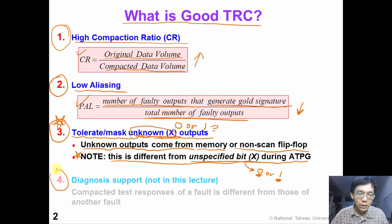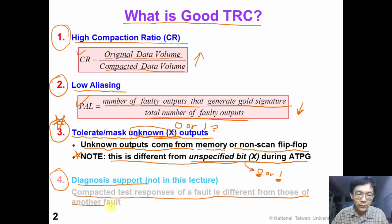Finally, we need diagnosis support. That means the compacted test response of a fault should be different from those of another fault, so that we can tell them apart when the CUT fails the test. In this lecture we are not going to go into details of diagnosis, but this is an important requirement for good TRC.